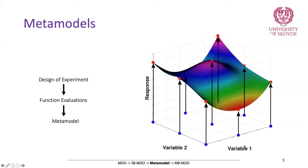What does this mean? If you want to find the response of any point in the same decision space, instead of running the finite element simulation — which takes around eight hours — or going to the lab and running a physical experiment which takes time and requires equipment, you can just input the variables into your metamodel and find responses on this surface. It's pretty fast — a fraction of a second you can find your responses.